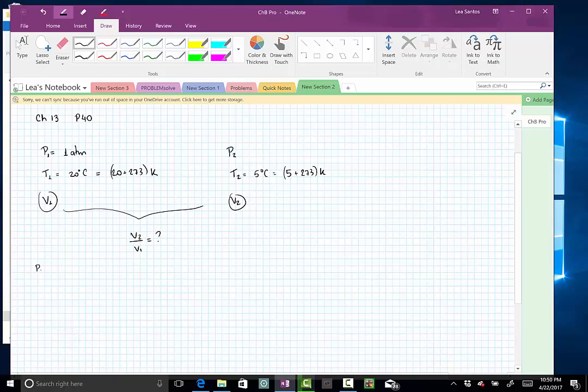Here I have P1 V1 equals nRT1. I'm going to put T1 here so that on the right I have something that is constant. On the other side, the new state: P2 V2 equals nRT2. This is also a constant.